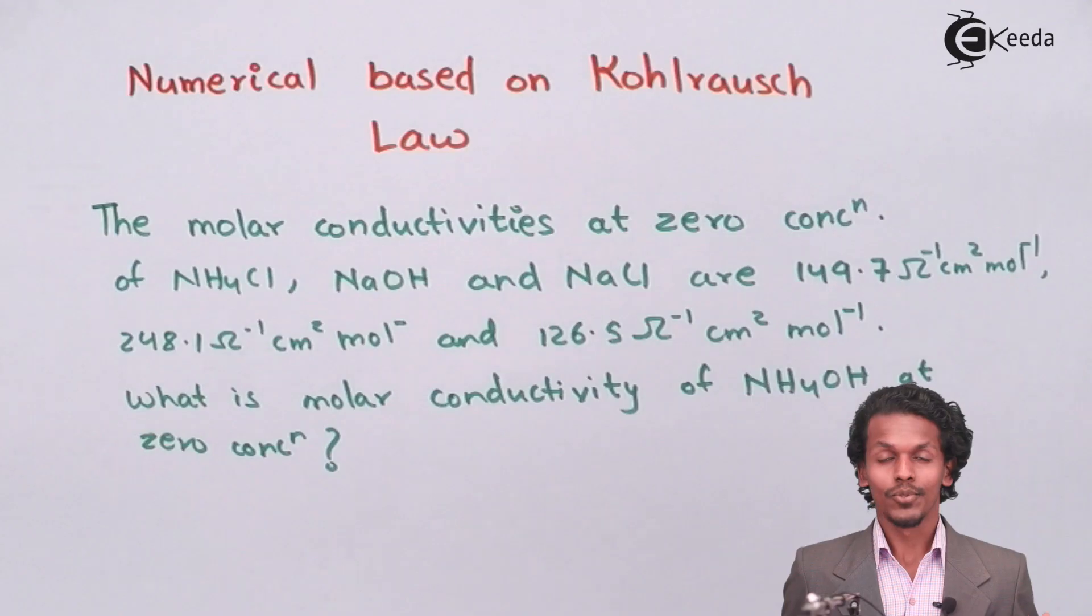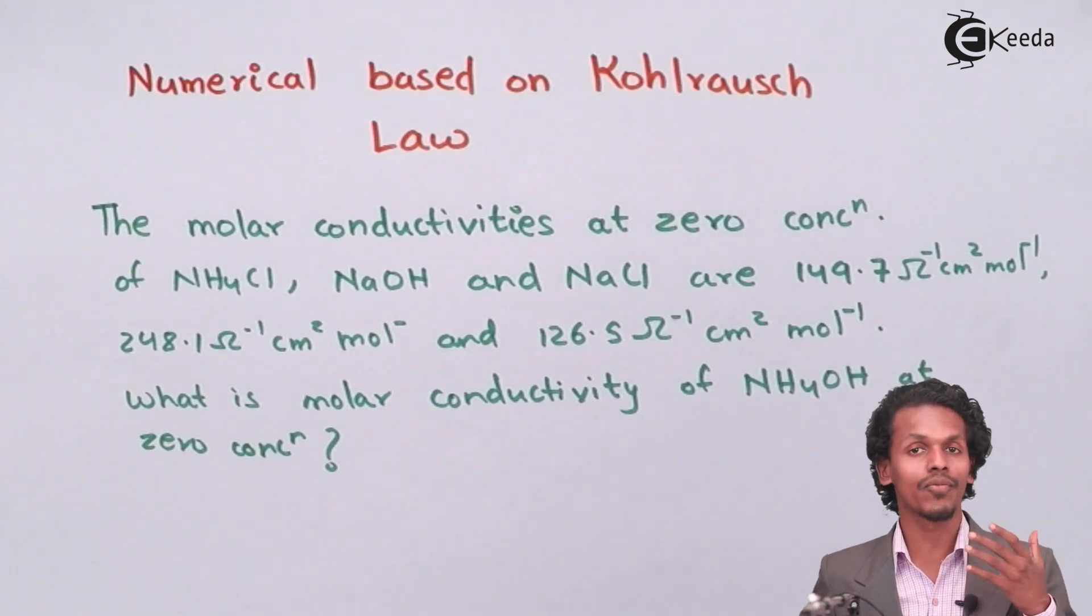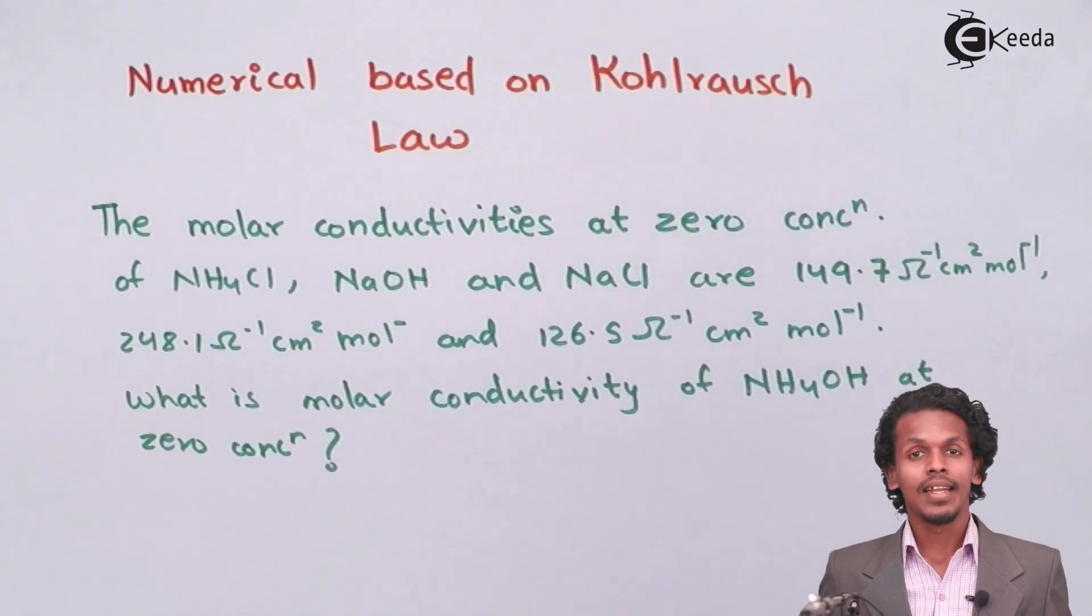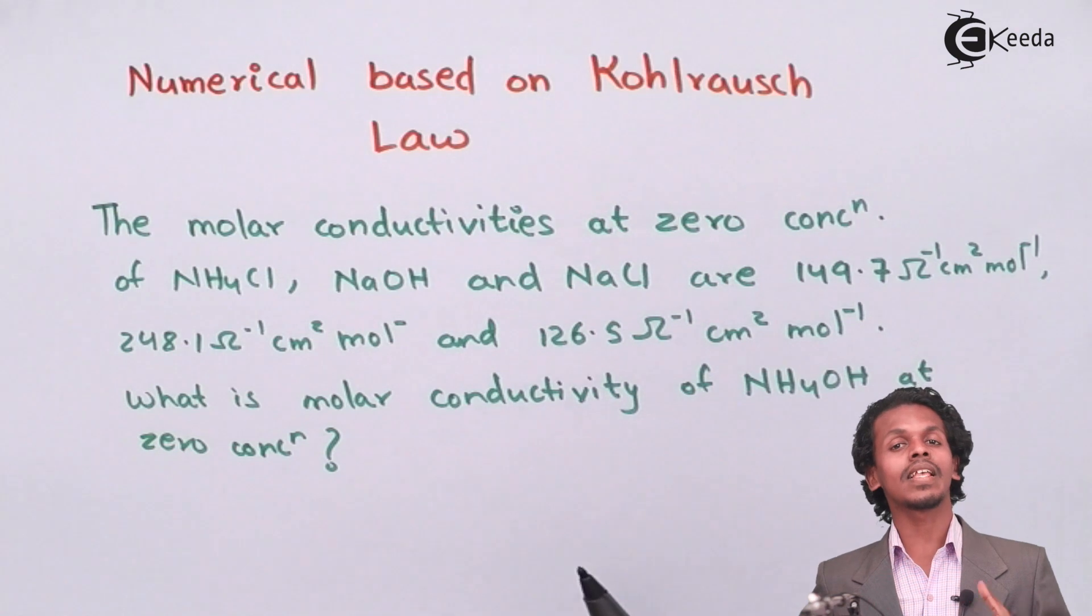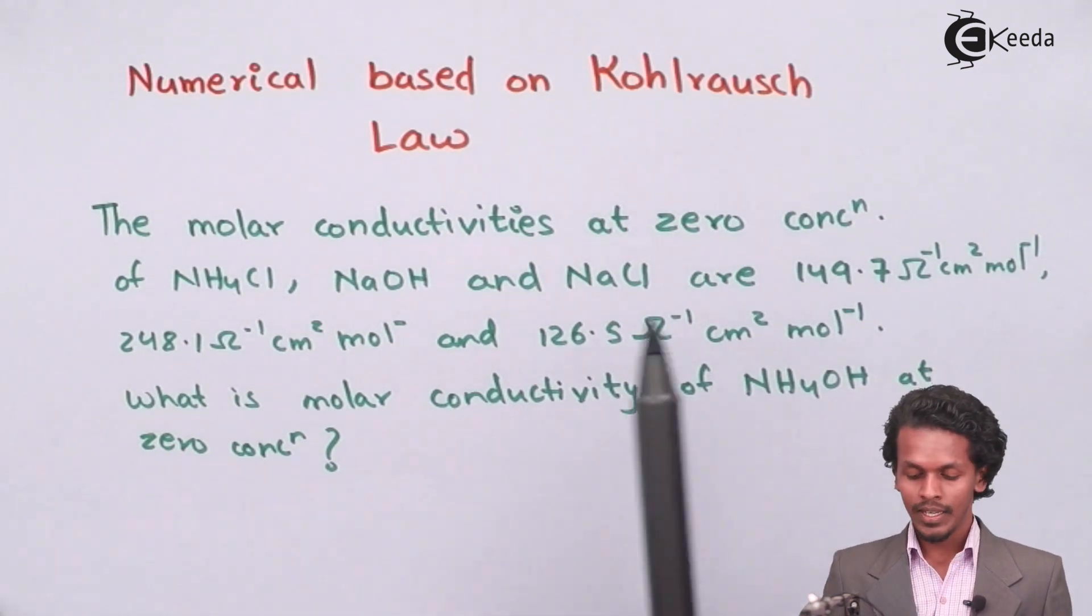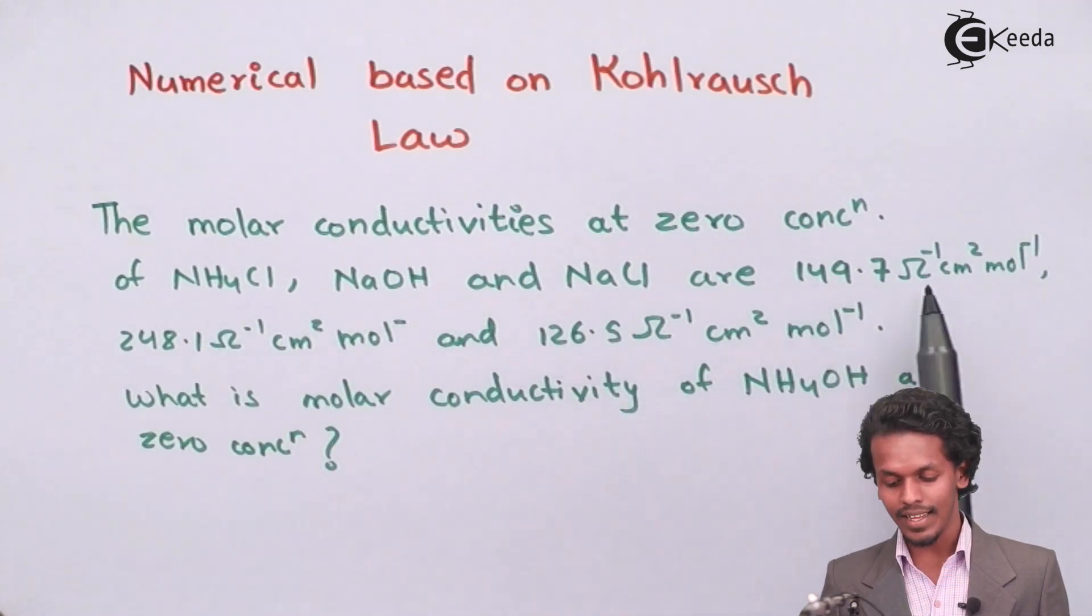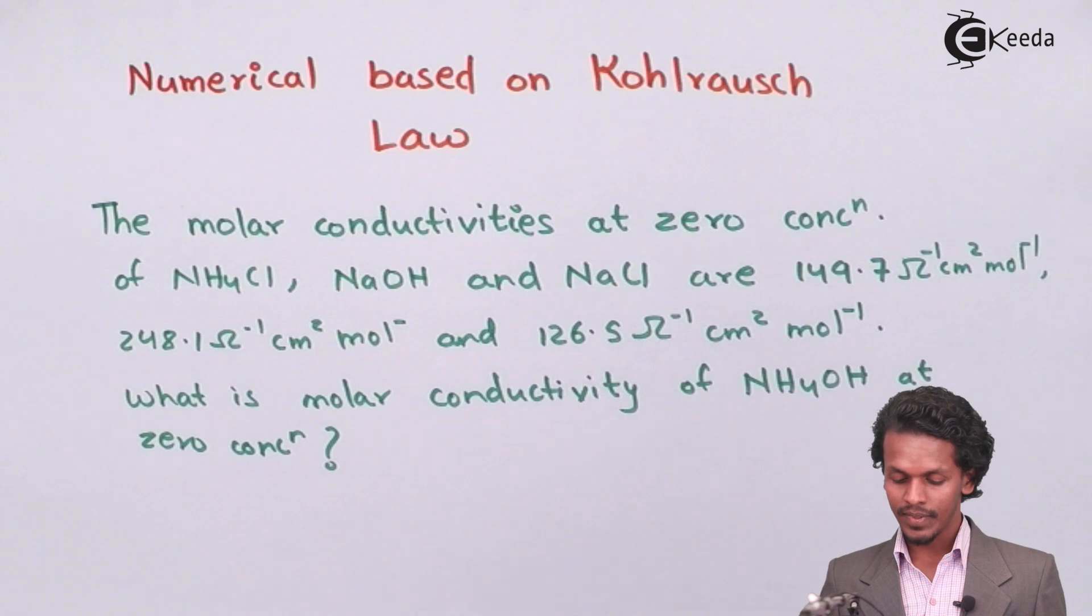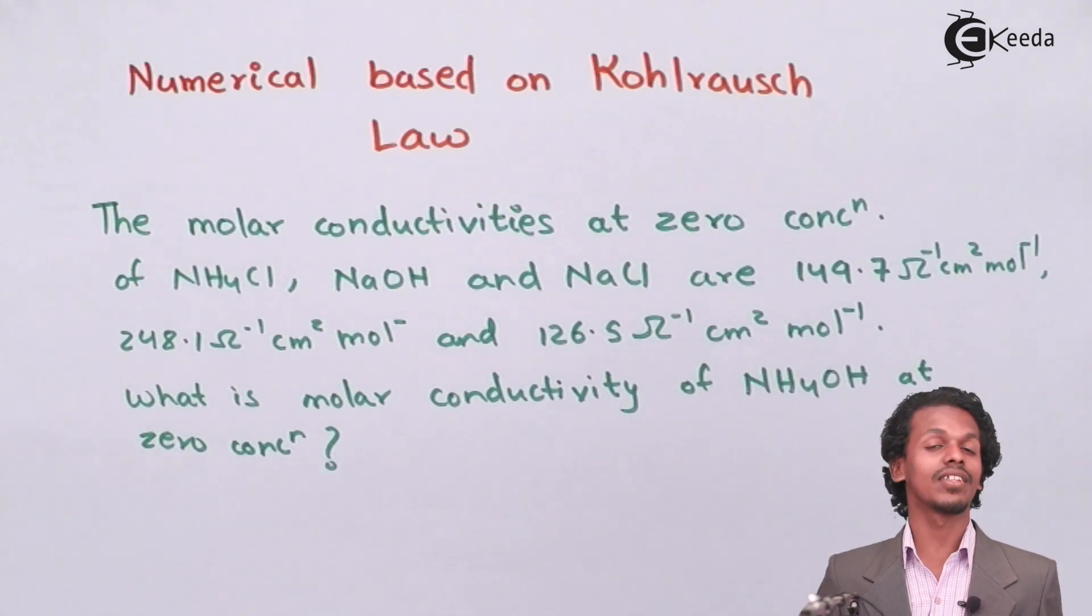So let us see. There is a question on your screen which is based on the Kohlrausch law at infinite dilution for weak electrolyte. It says that the molar conductivities at zero concentration, in this case zero concentration means infinite dilution, of NH4Cl, NaOH and NaCl are respectively given to us. So what would be the molar conductivity of NH4OH at zero concentration?